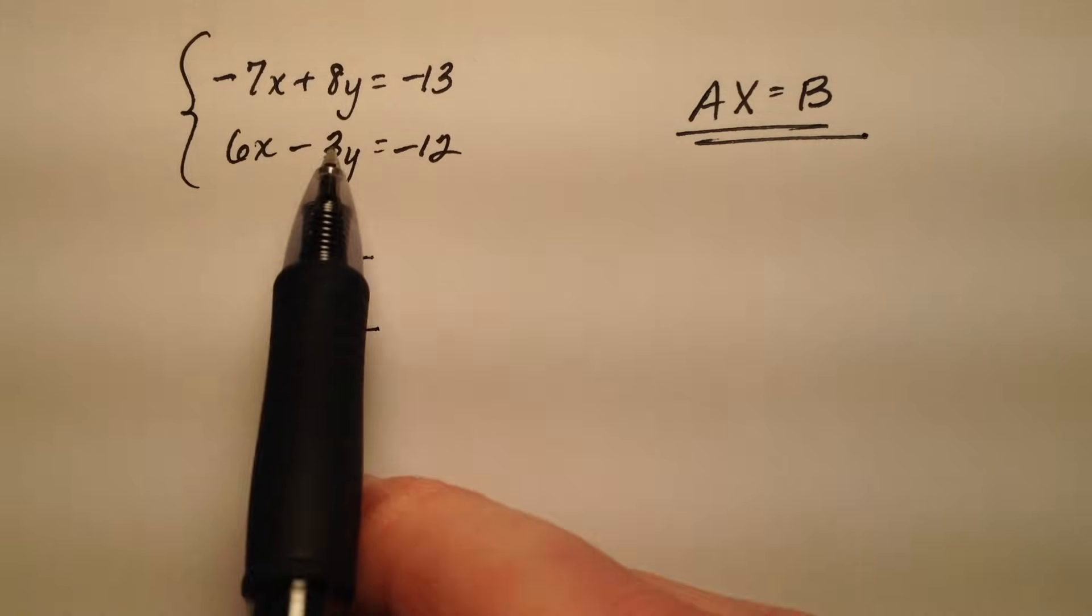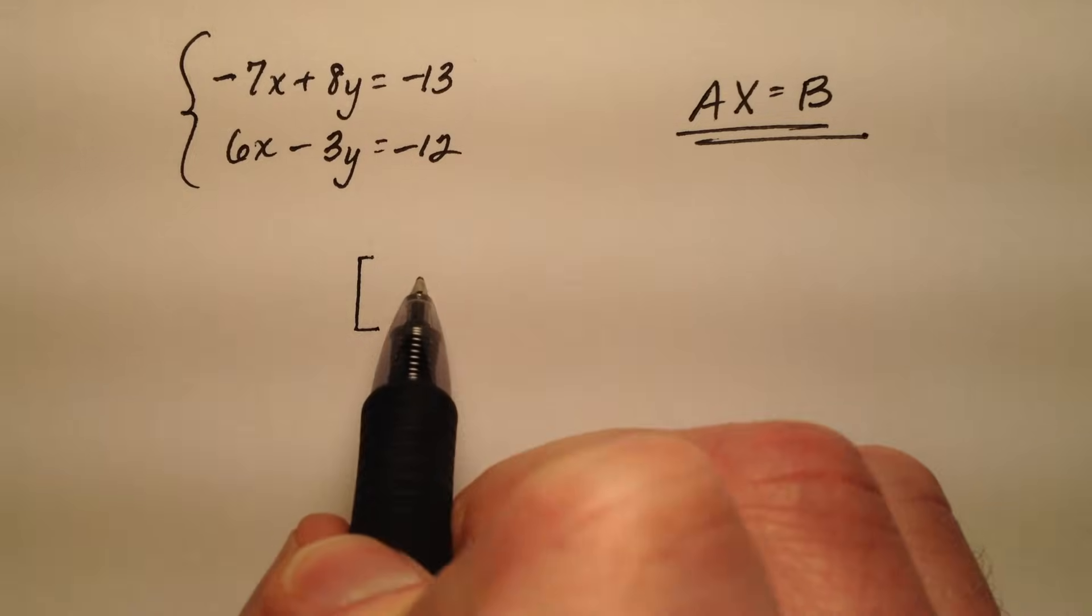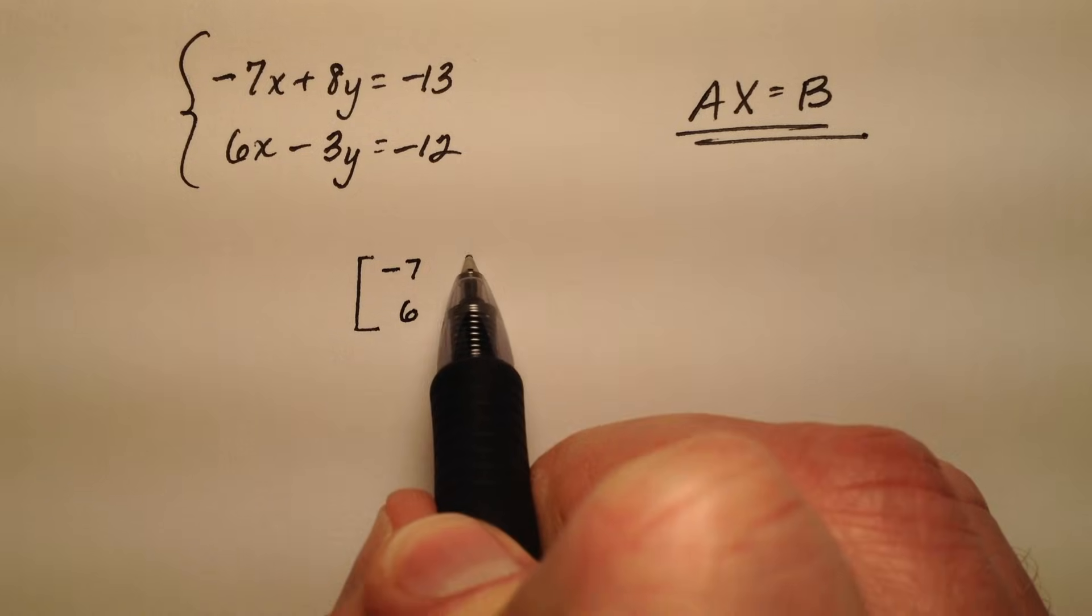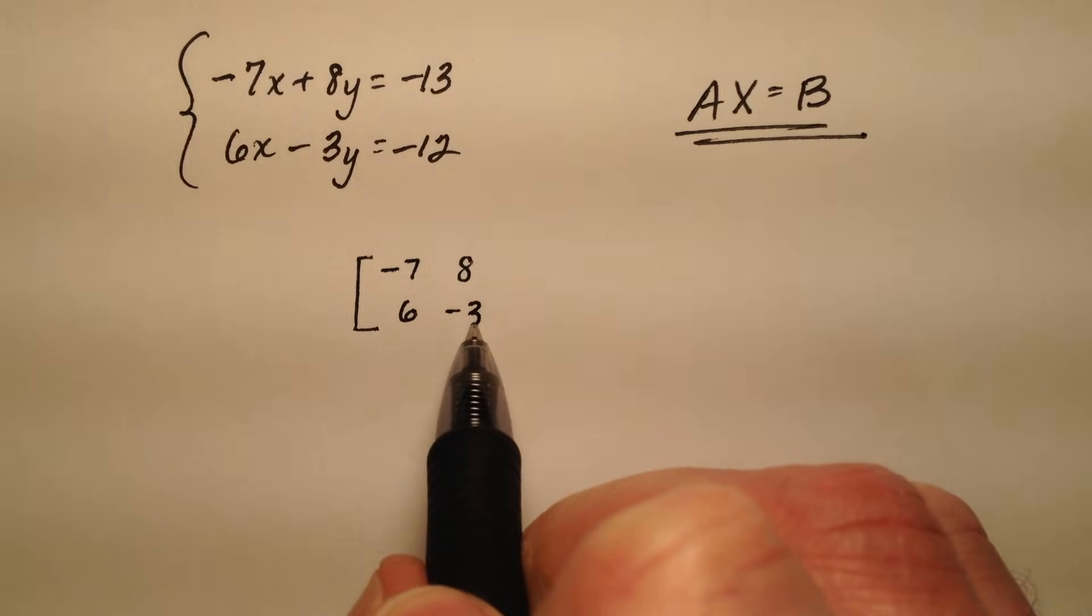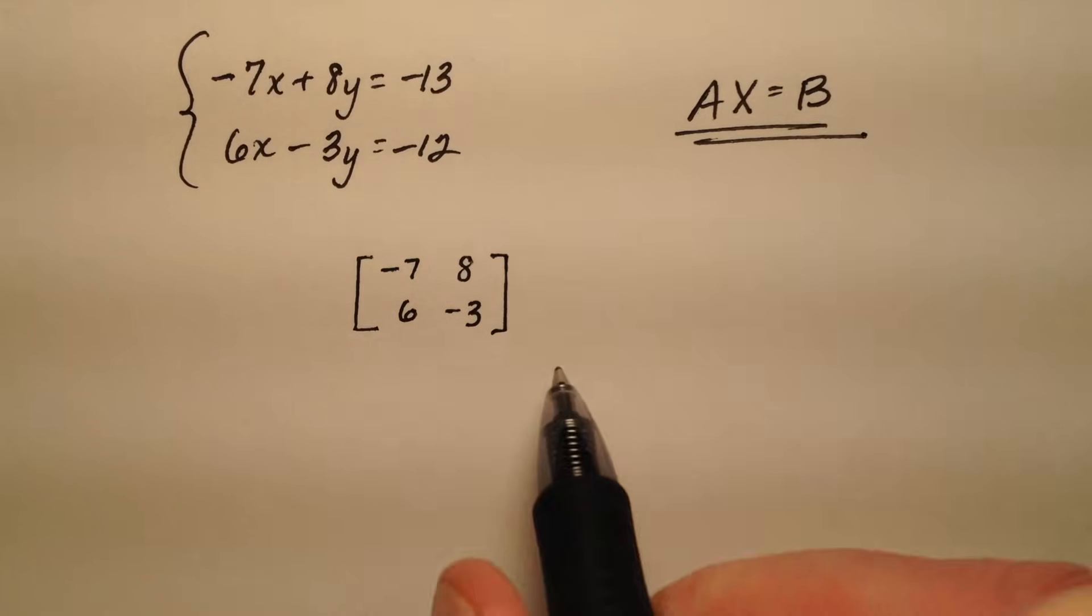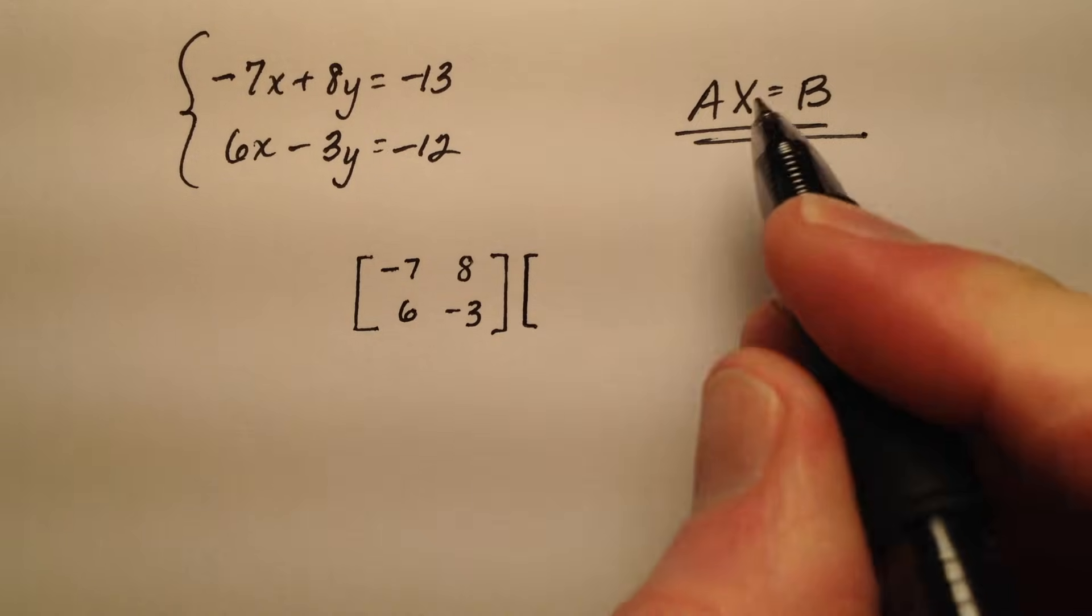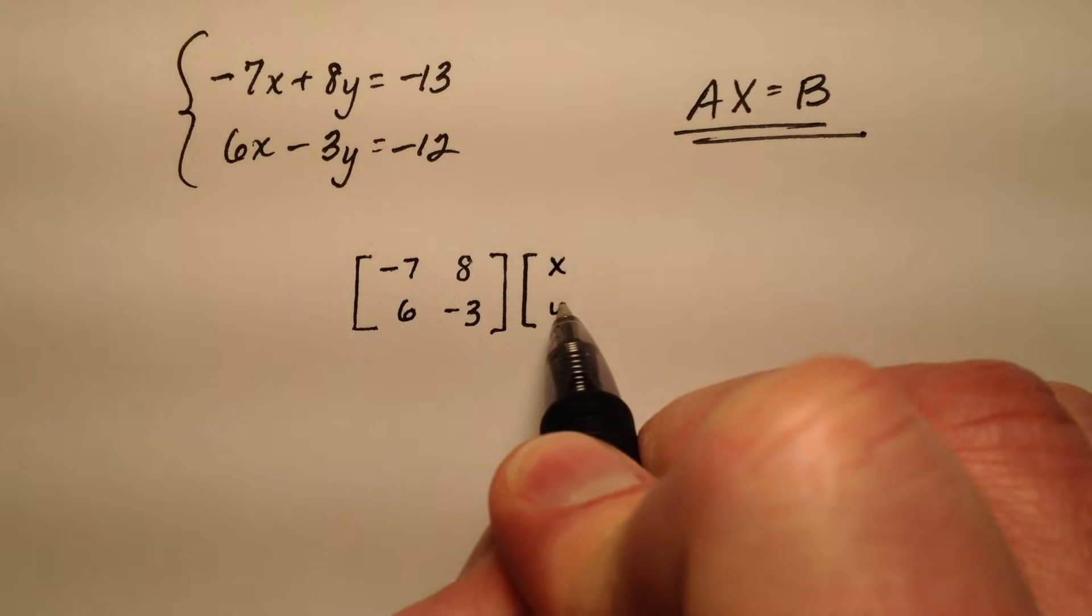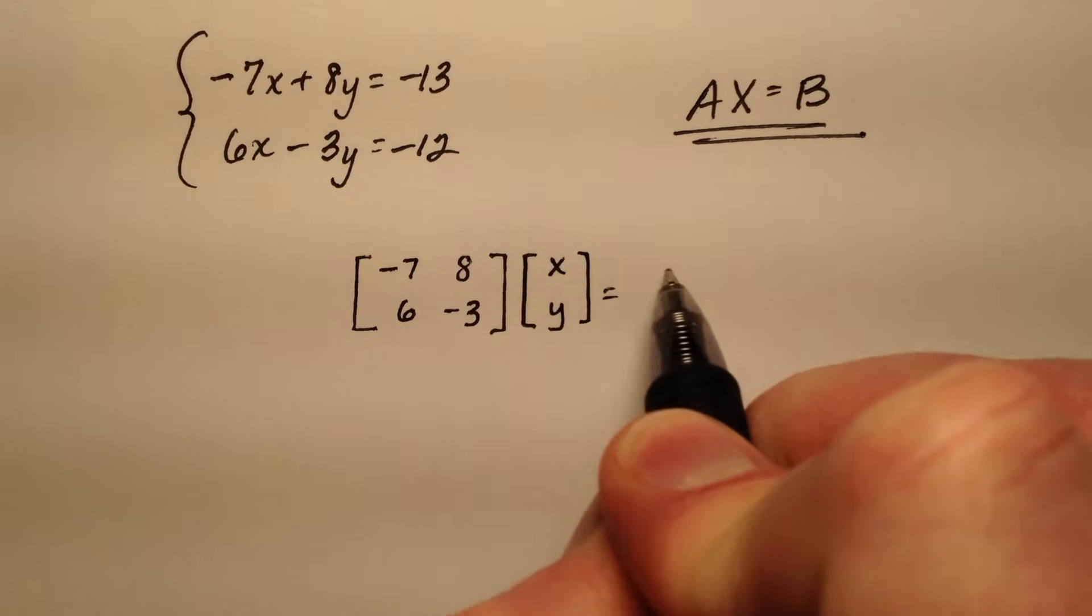The coefficient matrix just means I'm going to grab the coefficients of my x's and y's. The x's will go in the first column and my y's will go in the second column, and then it's going to be multiplied by X which is my variable matrix which means I have x's and y's.